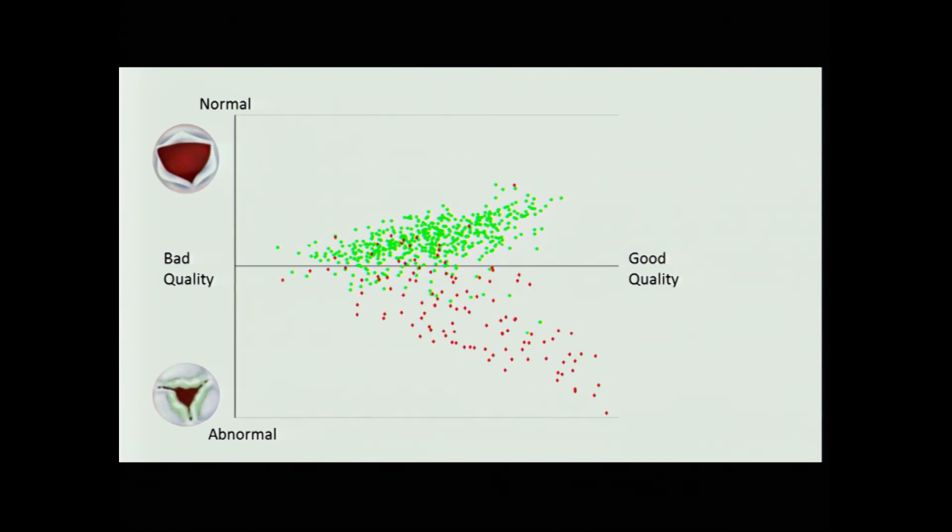Similarly, with all the abnormal ones, they're mostly below the line. The thing is doing kind of okay. It makes a few errors here and there, but the headline figure is about 90% accurate detecting these abnormalities.